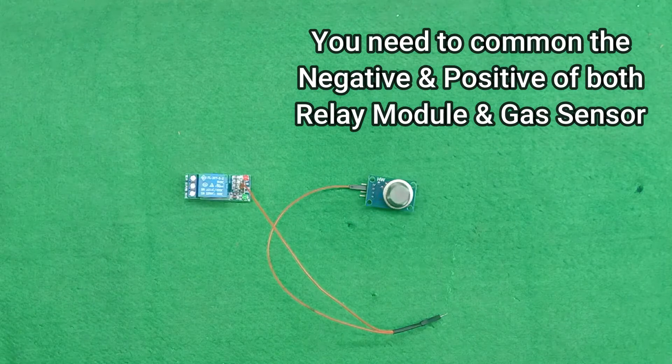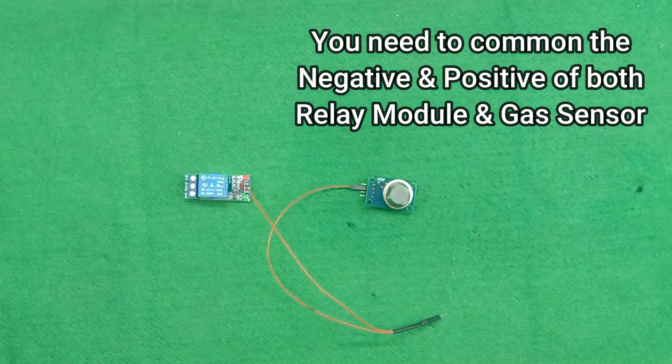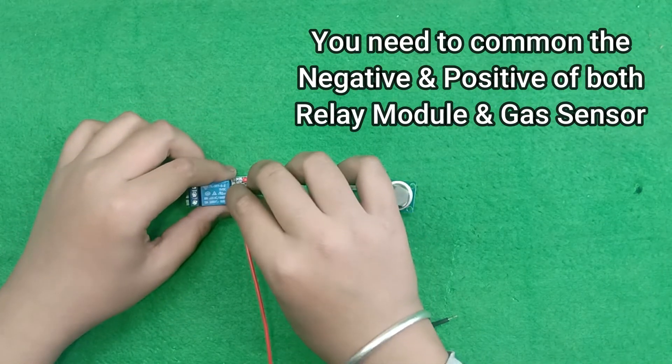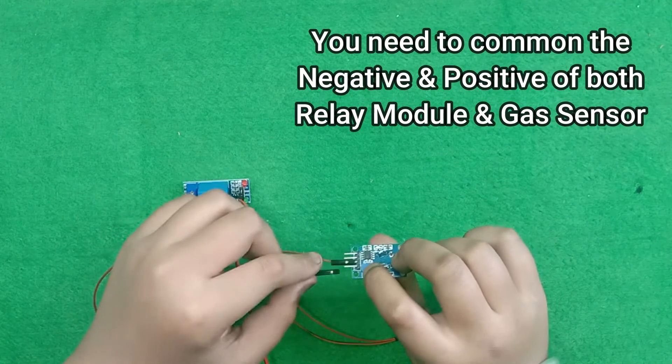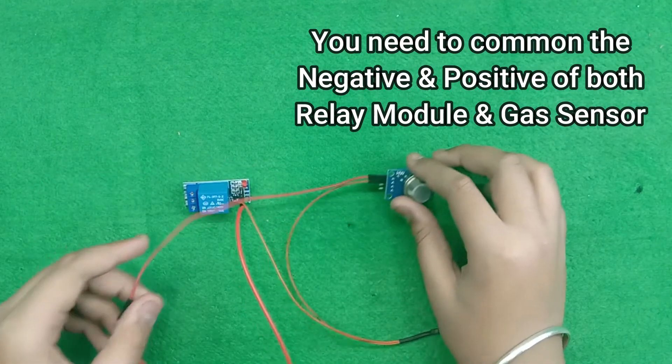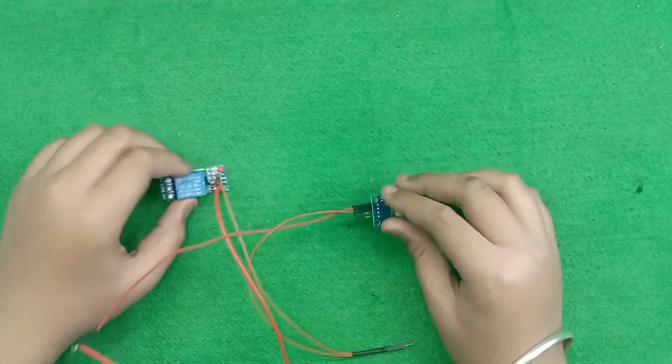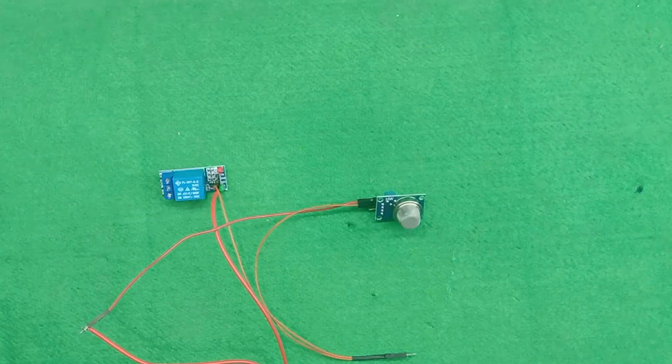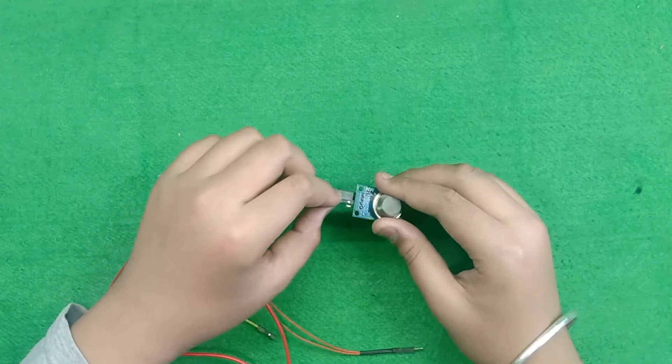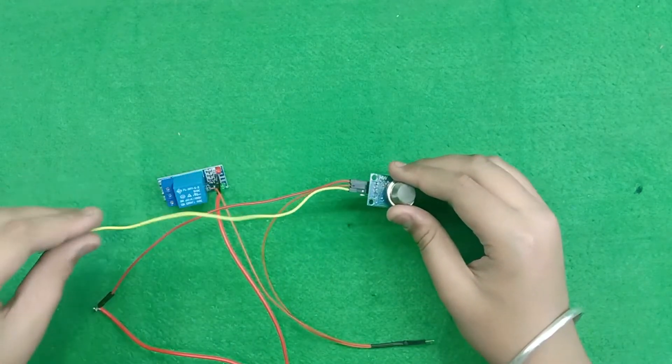Then, we need to also connect the positive of both. Here the positive of relay module and here the positive of MQ sensor. Then, with the help of female to female jumper wire, we need to connect the digital output of this MQ sensor to the input of relay module.